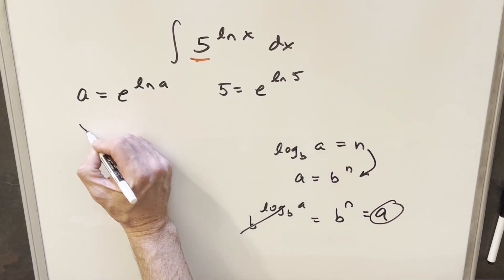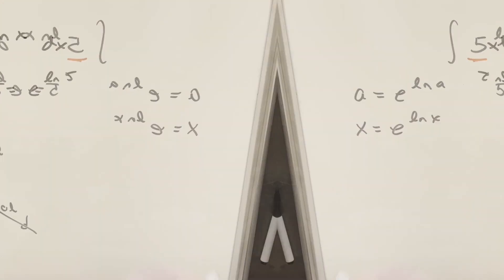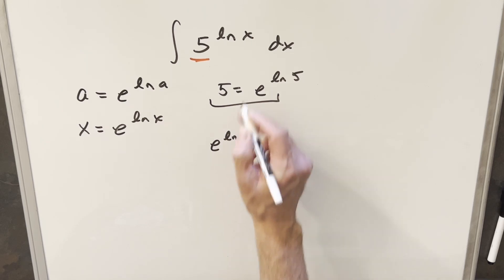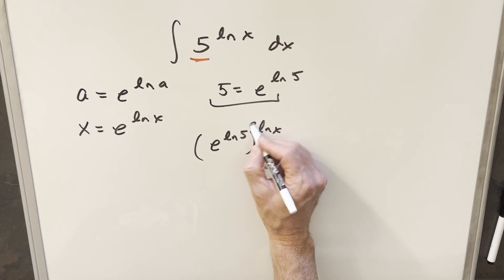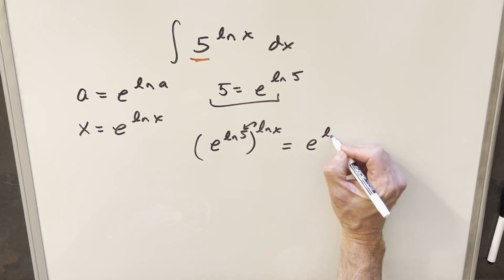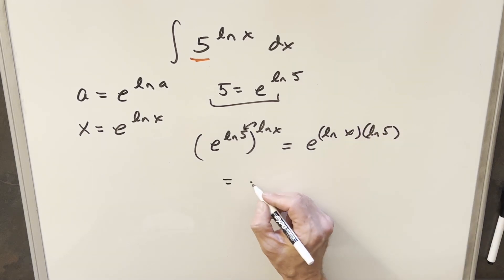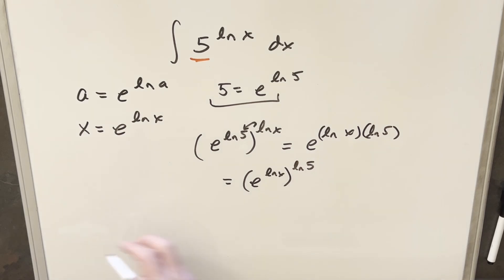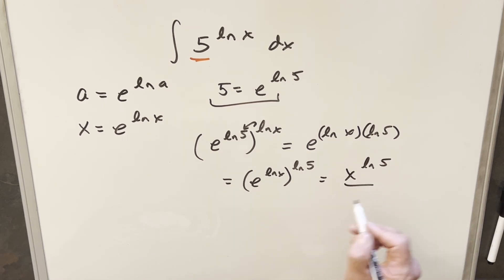So that's what we've done here with 5, and you can also do this with x — you can write x as e to the ln of x. Back to this, using e to the ln 5 as our definition for 5, if I have e to the ln 5 raised to the ln x, then by exponent properties we can multiply them: e to the ln x times ln 5. Or equivalently, e to the ln x to the ln 5 power. Since e to the ln x is just x, we can write this as x to the ln 5.